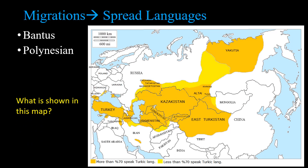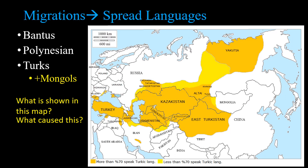Turkic languages are spread by the Mongols, the Seljuk Turks, the Ottoman Turks, the Delhi Sultanate, and the Mughals — all these groups moving around spread the Turkic language. And finally, Islamic expansion spreads Arabic, so in many parts of the world very far from Arabia you have people speaking Arabic or at least an Arabic-influenced language.